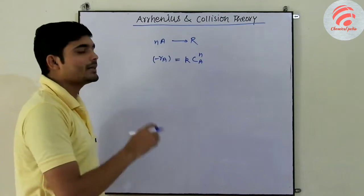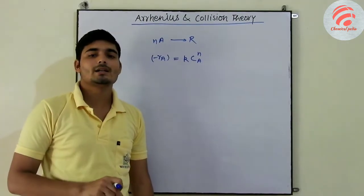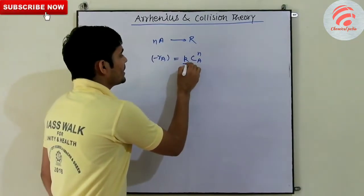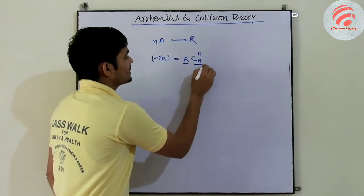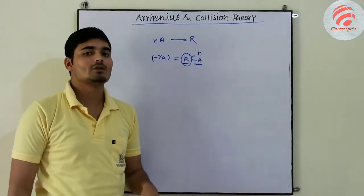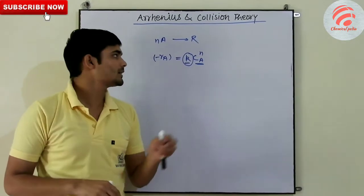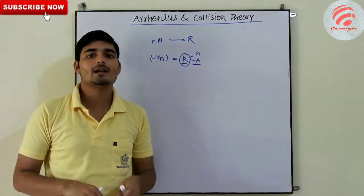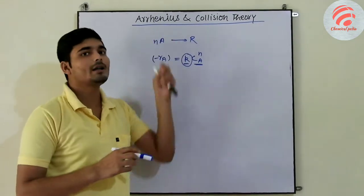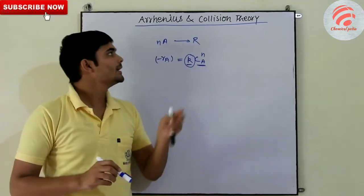So, what happens in this rate of reaction? The rate of reaction depends on temperature and concentration. The two functions are temperature and concentration. Now, k is our temperature function. We have two theories. One is collision theory and one is Arrhenius theory.